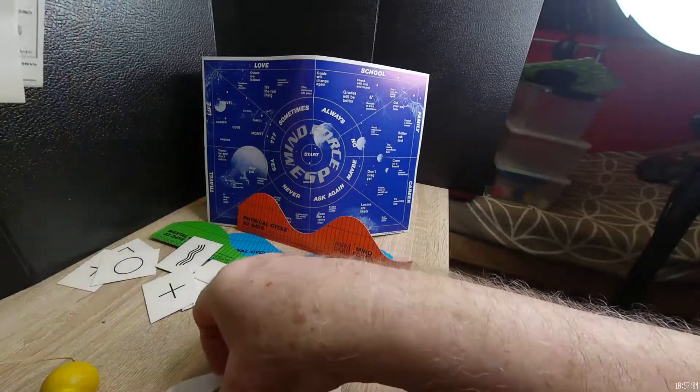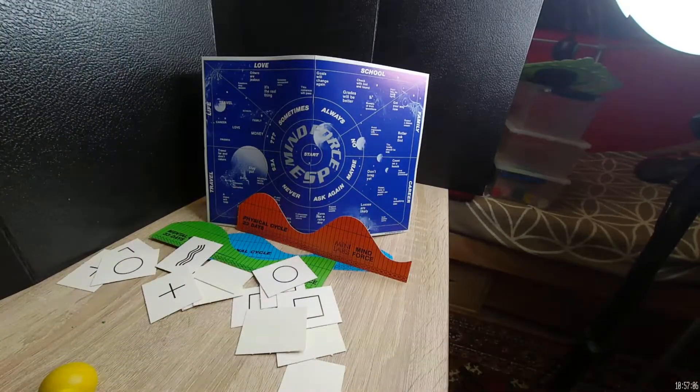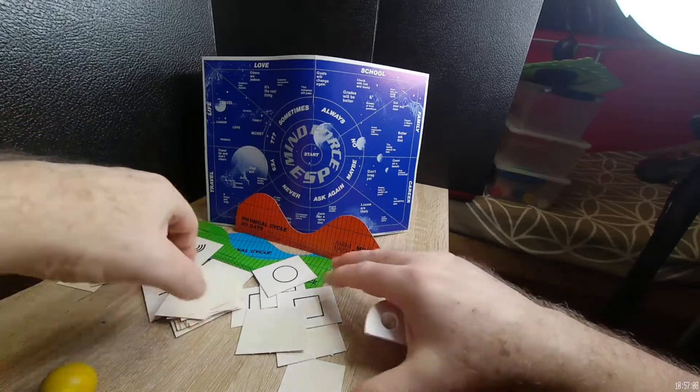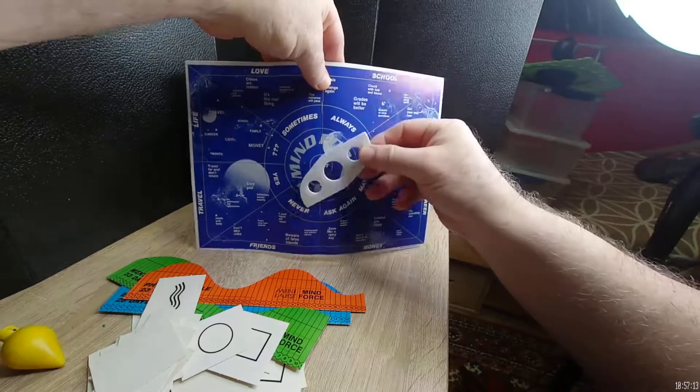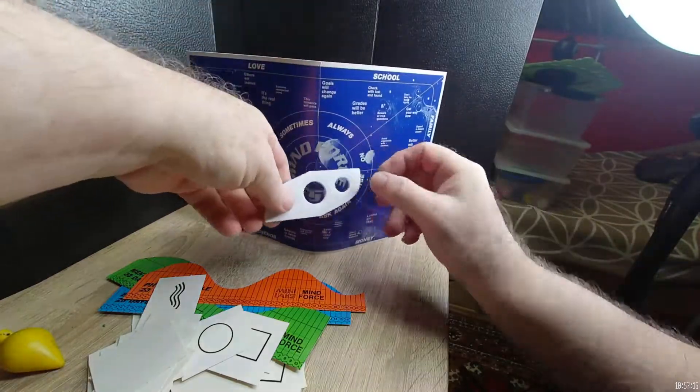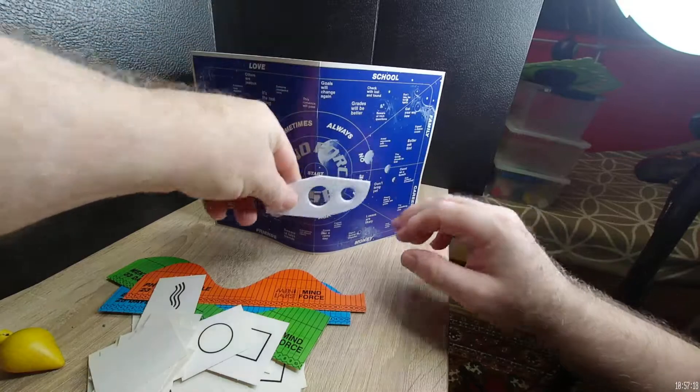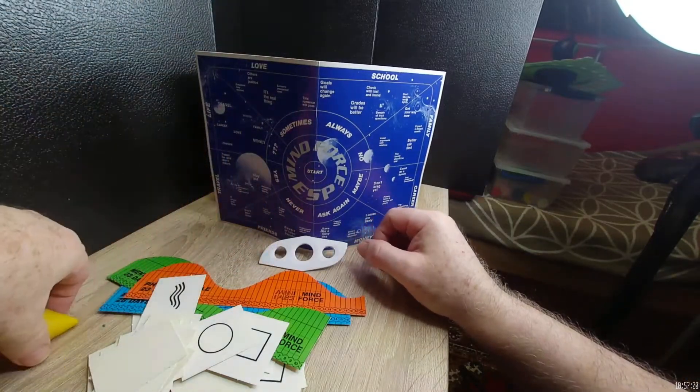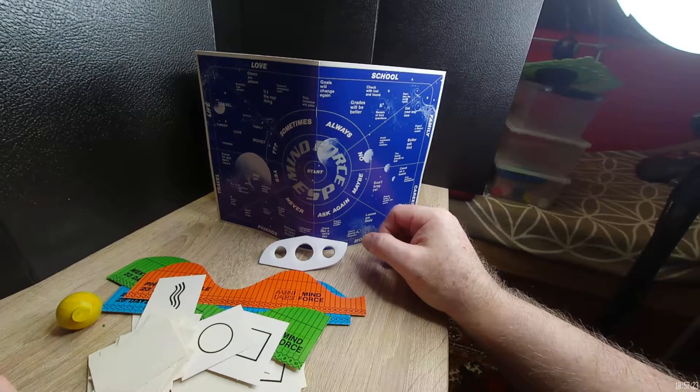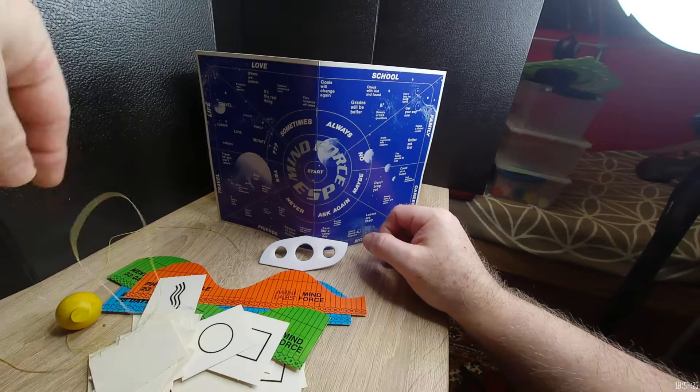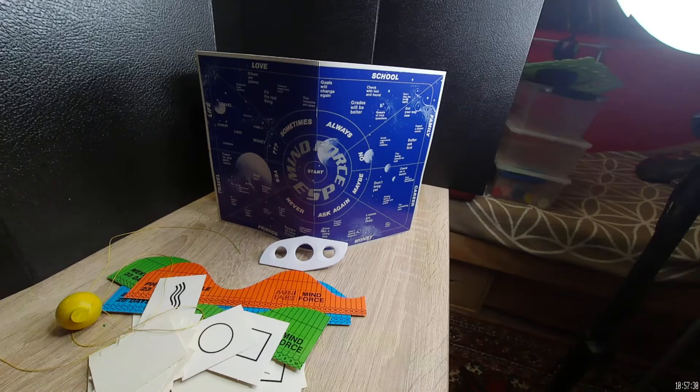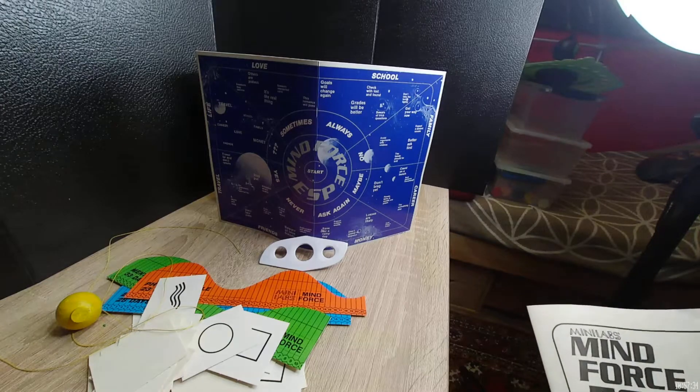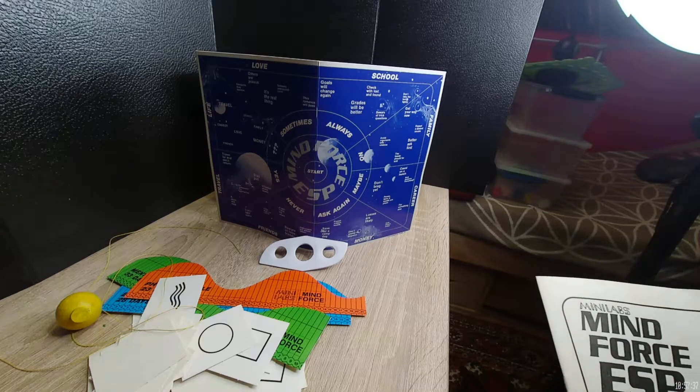Let's get these out of the way. Here's actually the planchette that goes with this. You put your fingers on it and use this to go around this board, so it's like a little Ouija board. You could use a pendulum as well but it gives you a little planchette there. This is from 1979, I stand corrected there, and of course you get 30 of those cards.